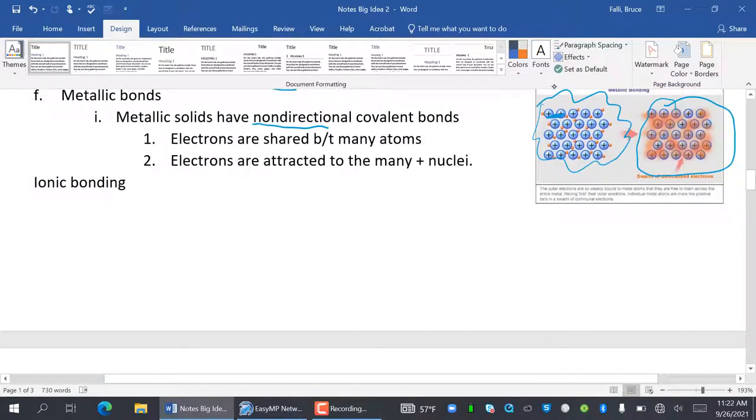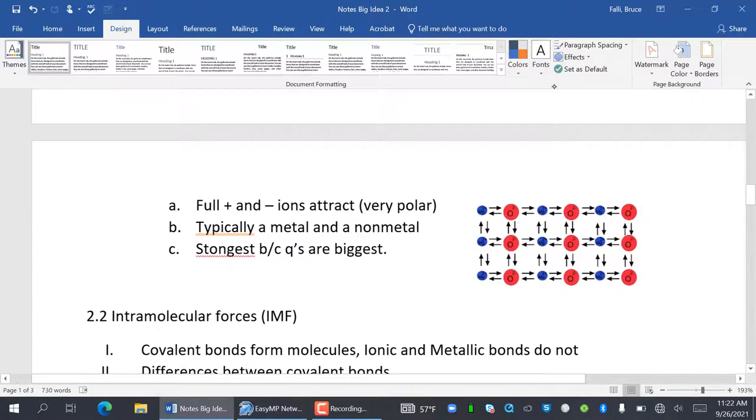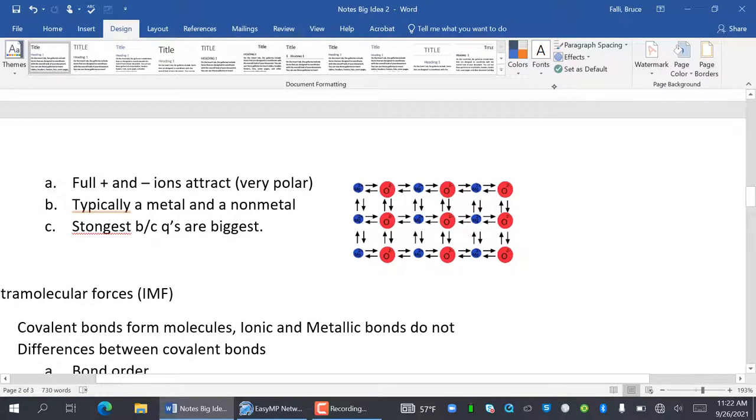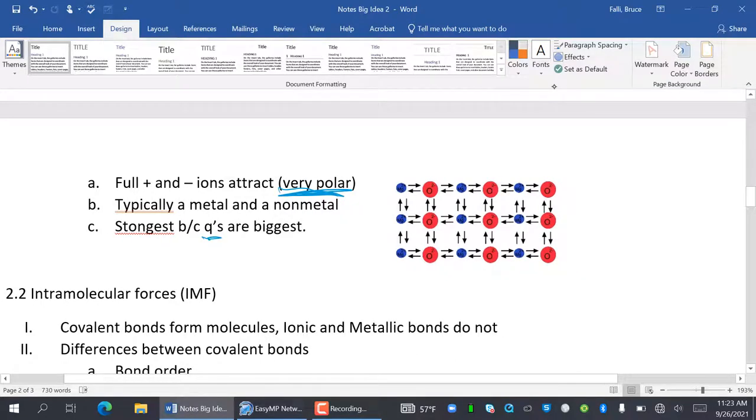Ionic bonding. Bad page break. Boo to me. So ionic bonding. Full positives and negatives attract. So it's very, very, very, very, very polar. So polar it's got a new category for it. So kind of like if the Jeep example that I used before. If I had a Jeep, I never say I'll drive and I'll take my car. I'd say I'd take my Jeep. They're typically a metal and a non-metal. And these are the strongest because the Qs are the biggest. Qs being the charges.